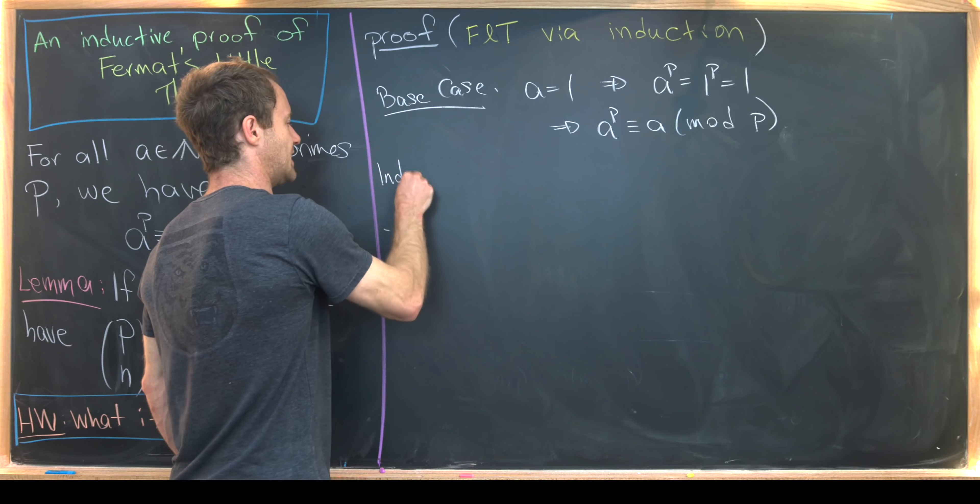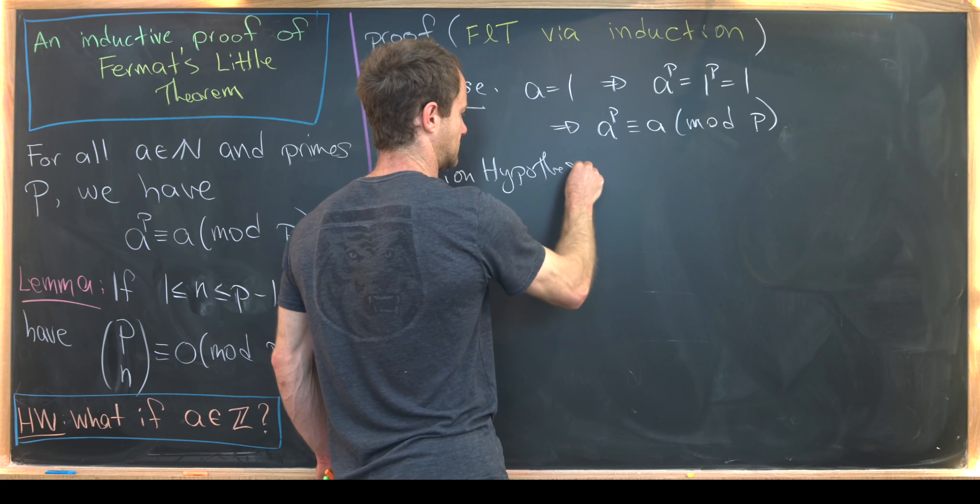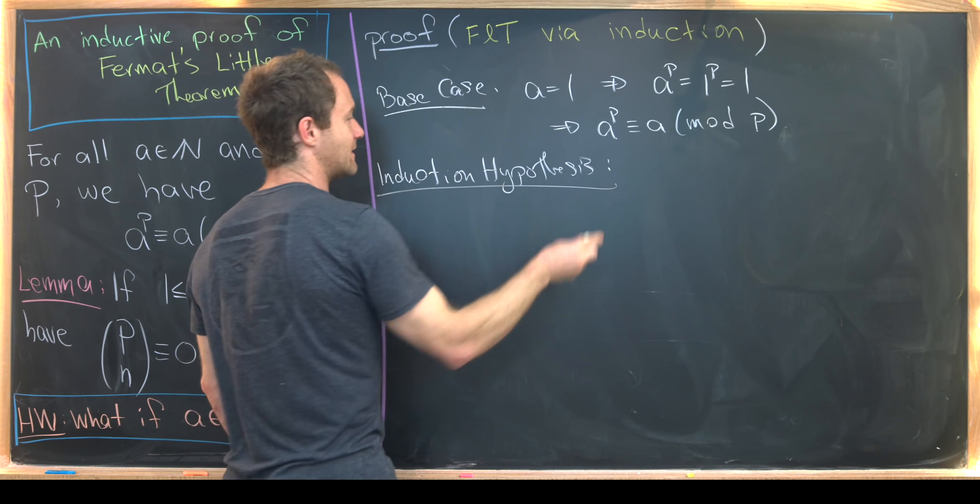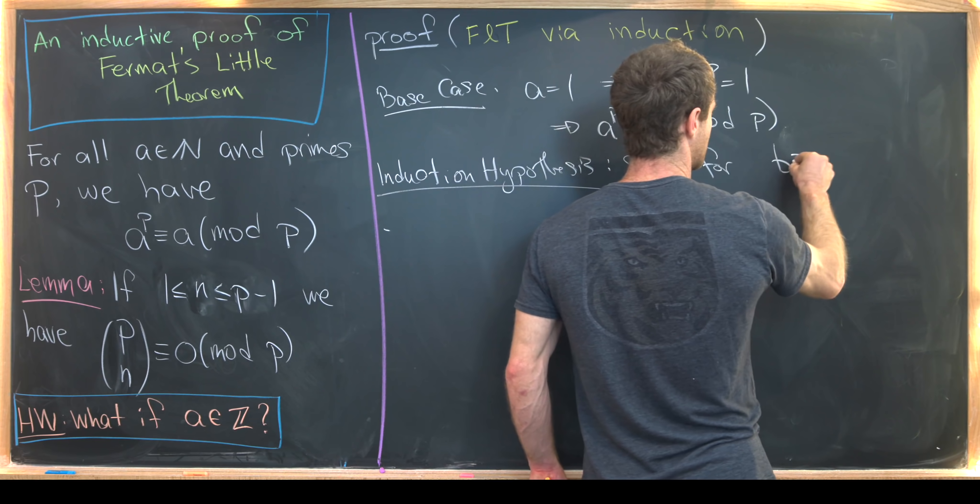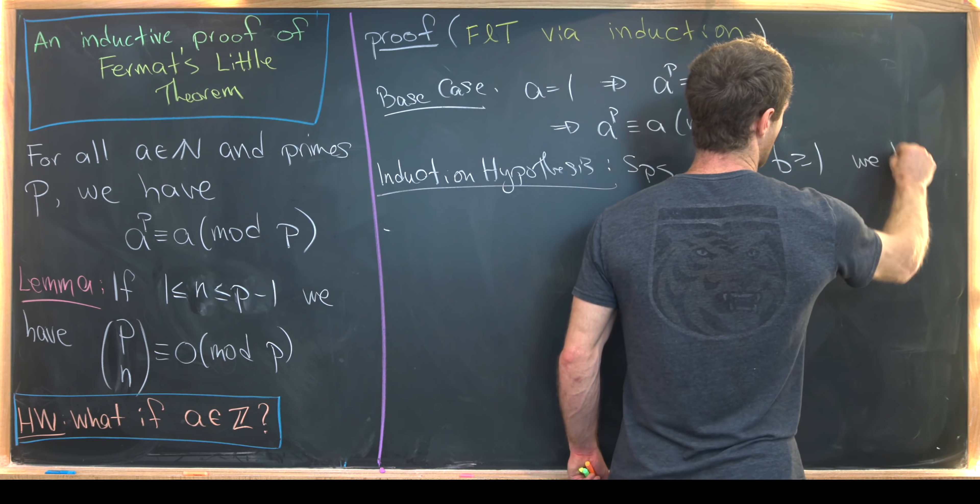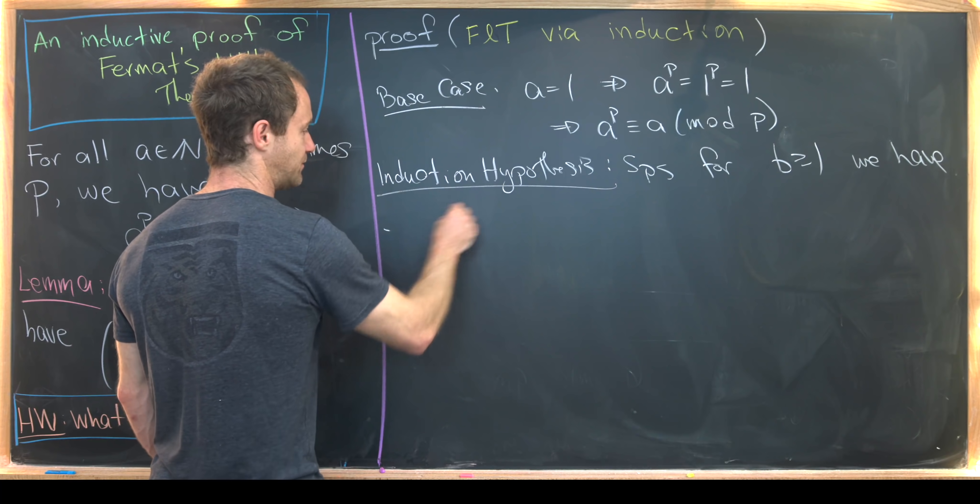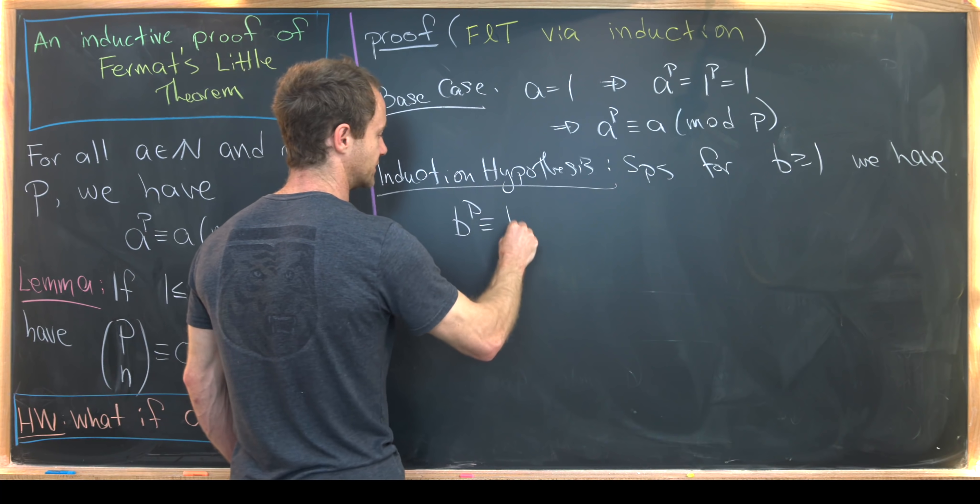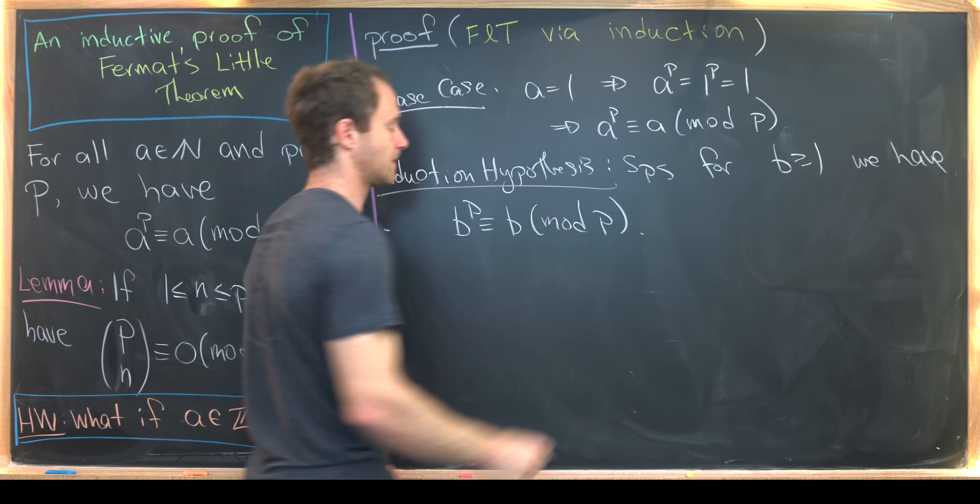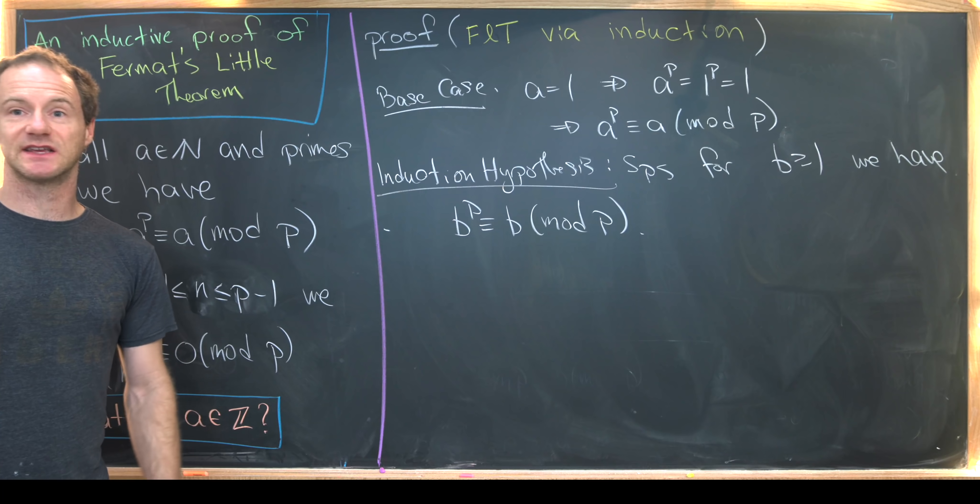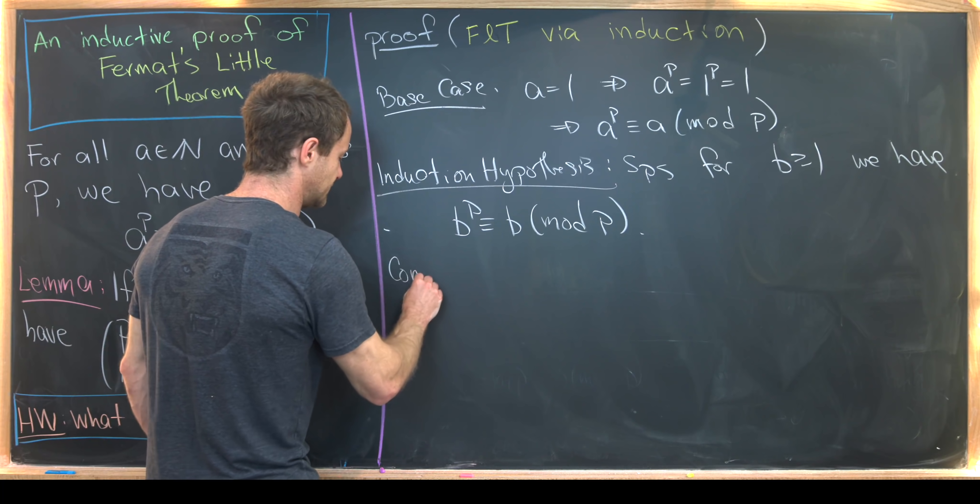Okay, so next let's make our induction hypothesis. So that means we want to suppose for some B bigger than or equal to 1, we have the result holding. So we've got B to the P is congruent to B modulo P. And then next we want to consider B plus 1 to the P. So let's do that.